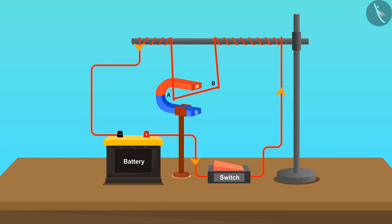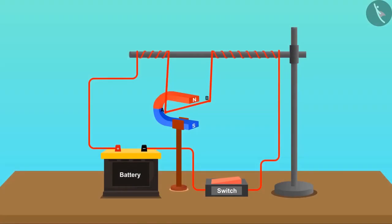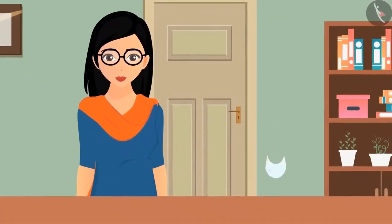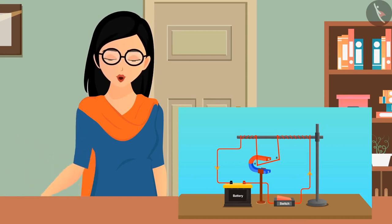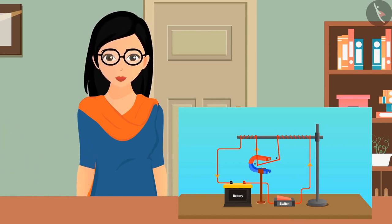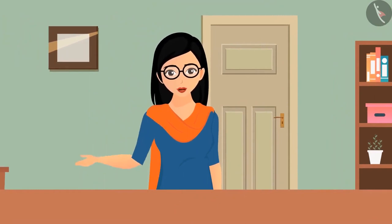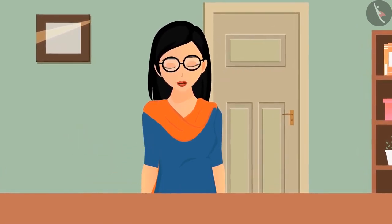What will happen if the direction of the current is changed? It can be seen that the deflection changes its direction when the direction of current is changed. But why does this happen? The reason behind the deflection is that the magnetic field produced by the current-carrying wire interacts with the magnetic field of the magnet — both exert a force on each other, causing the deflection we can see. But we still don't know why the direction of deflection changes when current changes direction.